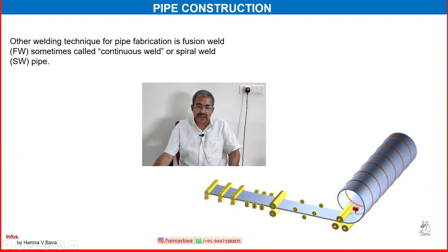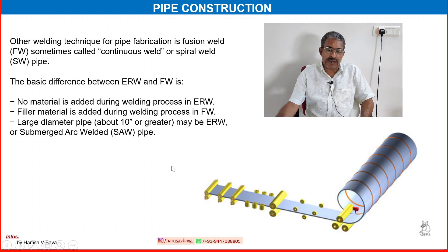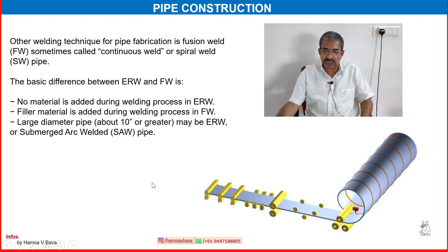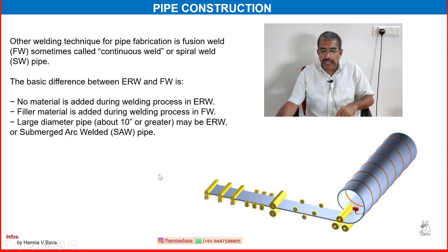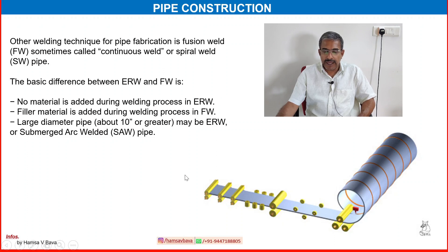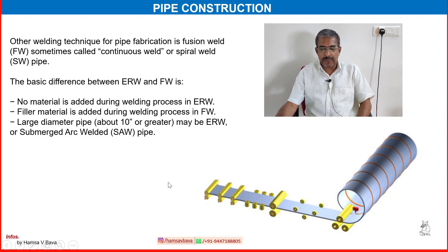Another welding technique of pipe fabrication is fusion welding, sometimes called continuous weld or spiral weld pipe. The basic difference between electric resistance welding and fusion welding is that no material is added during the welding process in electric resistance welding, whereas filler material is added during the welding process in fusion welding.